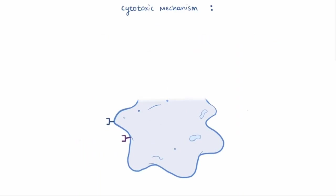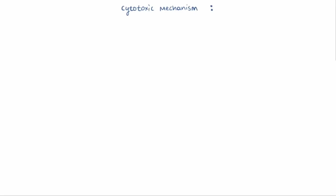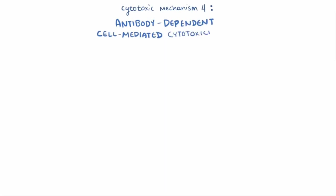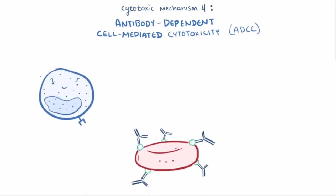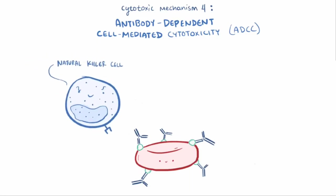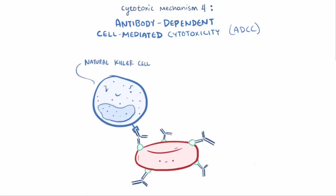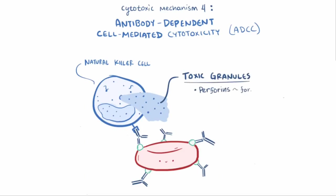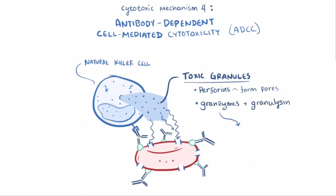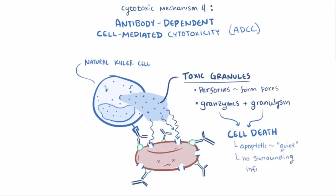The last three mechanisms involve the complement system in one way or another, but the last couple are a little different. The fourth mechanism is called antibody-dependent cell-mediated cytotoxicity, or ADCC. In this case, the bound antigen-antibody complex gets recognized by immune cells called natural killer cells. The natural killer cell recognizes the Fc tail of the antibody and releases toxic granules. These granules contain perforins, which just like the MAC form pores in the cell, except that this time the pore also allows entry of enzymes called granzymes — silent assassins — as well as granulysin, which work together to cause cell death in an apoptotic or quiet death sort of way, such that there's no surrounding inflammation.